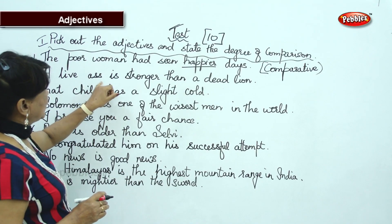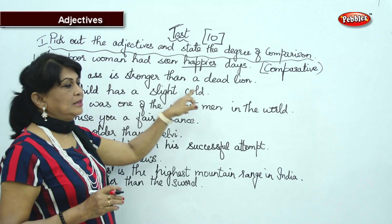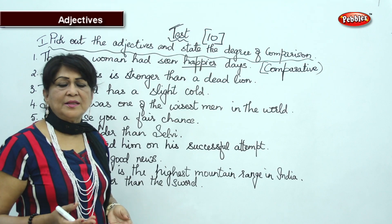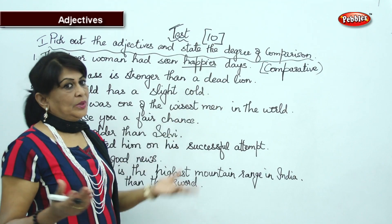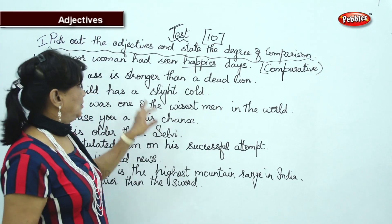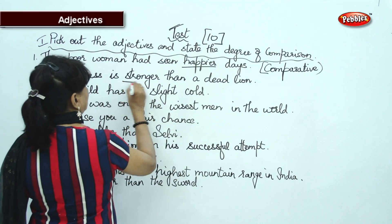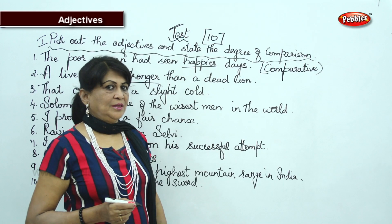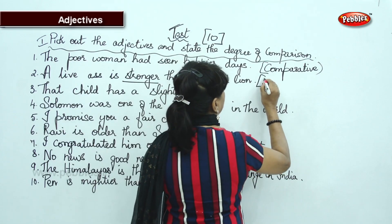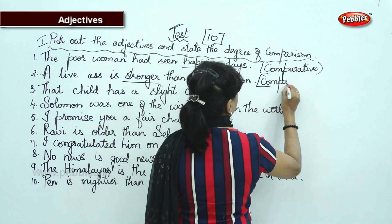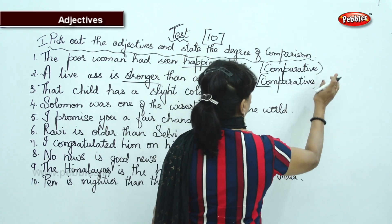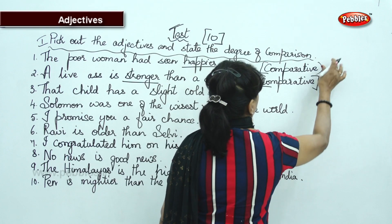'A live ass is stronger than a dead lion.' An ass is not of much use — it is a very insignificant animal — but compared to a dead lion, even a live ass is more useful. Now 'stronger' — stronger has -ER, so it is comparative degree.